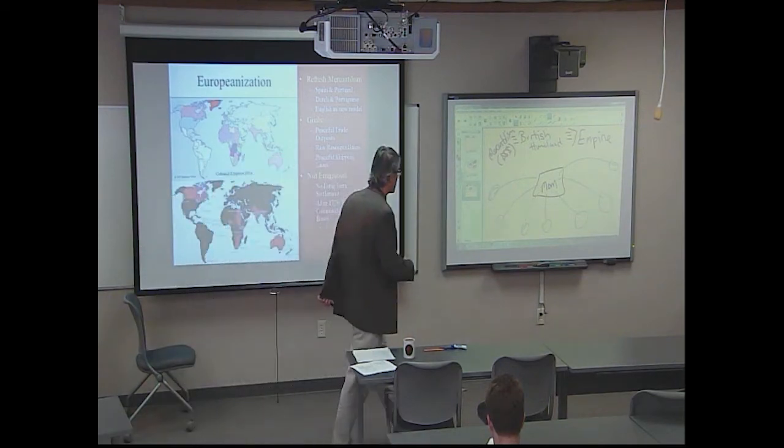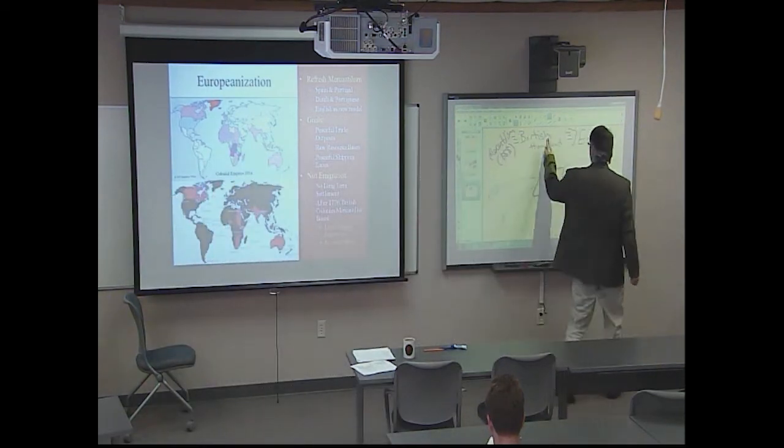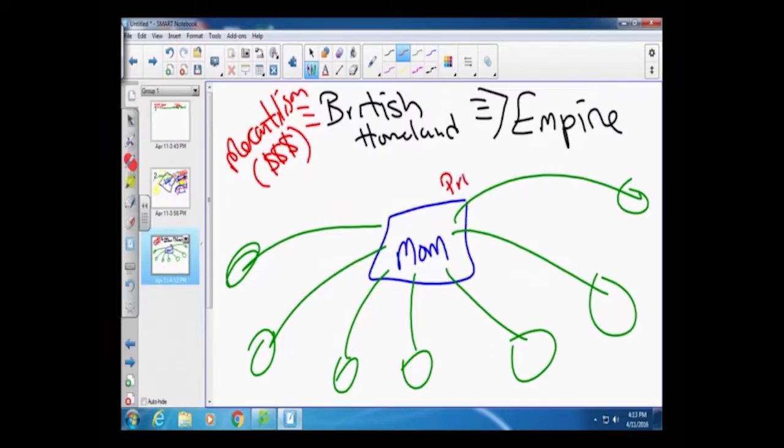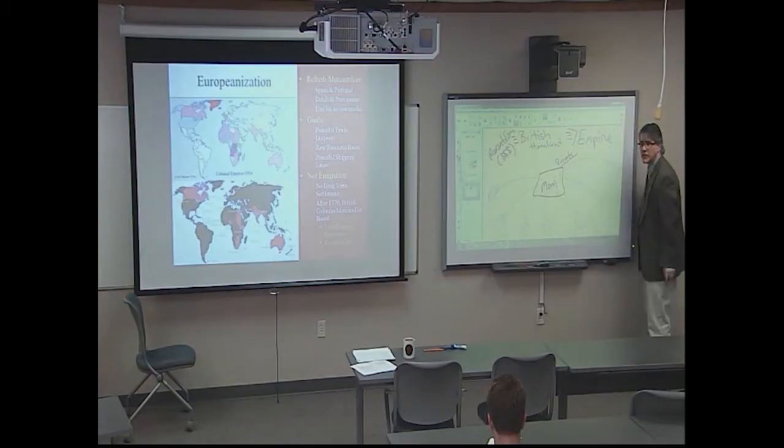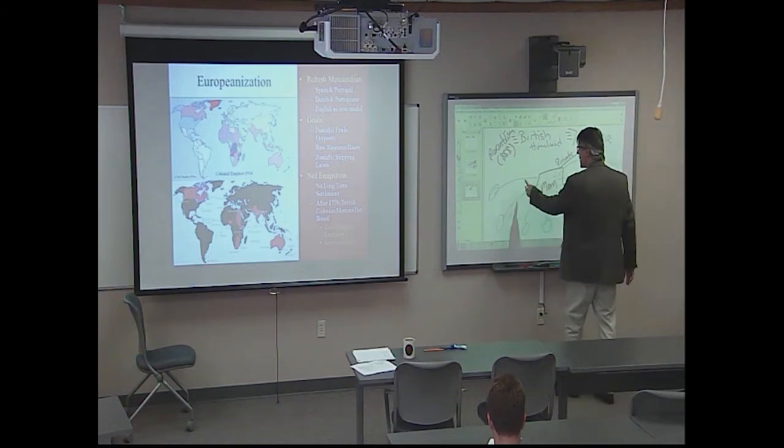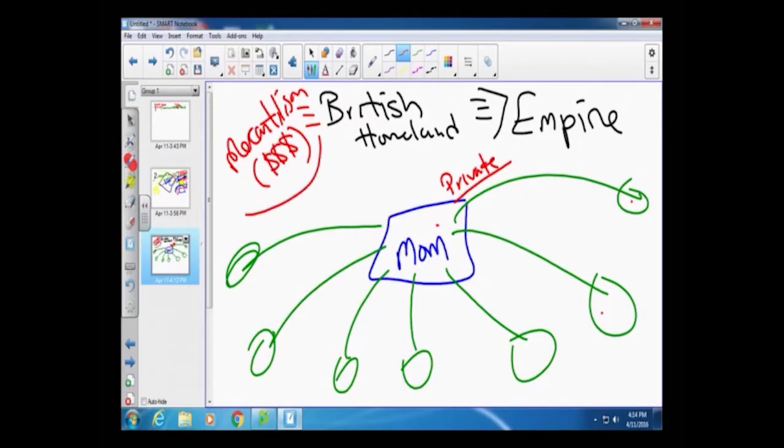So when England has interests all over the world, it's because there's private businesses, firms that have an interest in these economies. And they're going to pay taxes to the crown. They're going to employ people. This will help the English government. So it's a little bit more complex. It's not just money. It's about kind of empire.